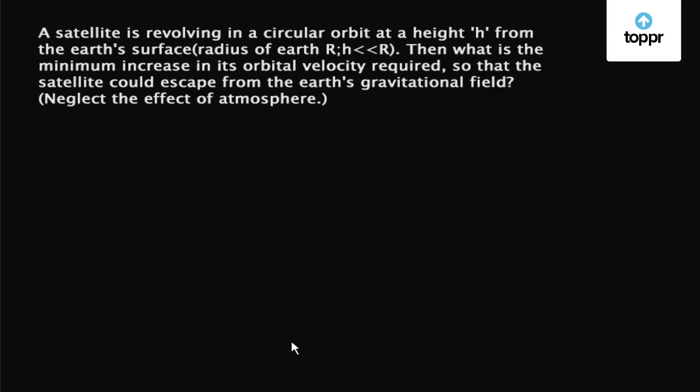Let's take a problem on gravitation. A satellite is revolving in a circular orbit at a height h from the Earth's surface. Radius of Earth is R and h is much much smaller than R.